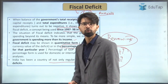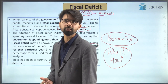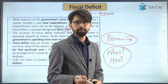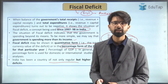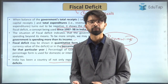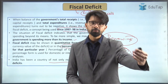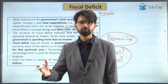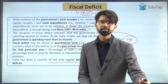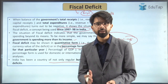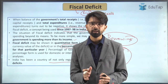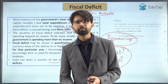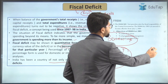India has been a country of not only regular but higher fiscal deficit. During the LPG reforms in 1991, India was having a very high fiscal deficit — its expenditure was running so high that it used to resort to borrowings of different types in order to meet its expenditure. To bring financial discipline within the expenditure of the government, the FRBM Act was legislated.